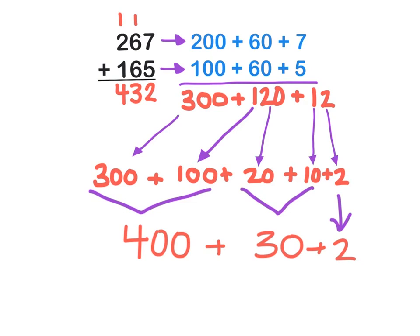So, my final answer has a value of 400 plus 30 plus 2. Now, we can write this in standard form using one digit for each place, 432.